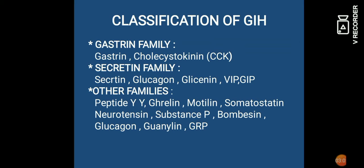Classification of gastrointestinal hormone — इनको families में बाँटा गया है। पहली है gastrin family, जिसमें gastrin hormone, cholecystokinin (CCK)। फिर secretin family, जिसमें secretin hormone, glucagon, GLP, VIP, GIP। कुछ दूसरी families हैं जिसमें बहुत तरह के hormones हैं — peptide YY, ghrelin, motilin, somatostatin, neurotensin, substance P, bombesin, GRP आदि।